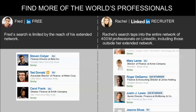Whereas if we look at the results that Rachel got by using LinkedIn Recruiter, we realize that she was able to tap into the entire network of 400 million professionals on LinkedIn, including those outside her extended network. If the talent she is looking for has a LinkedIn account, she will be able to find them. Because with LinkedIn Recruiter, she has no restrictions on search capabilities. This is one of the many advantages — access to all professionals on the LinkedIn platform, whether they are within your network or not.